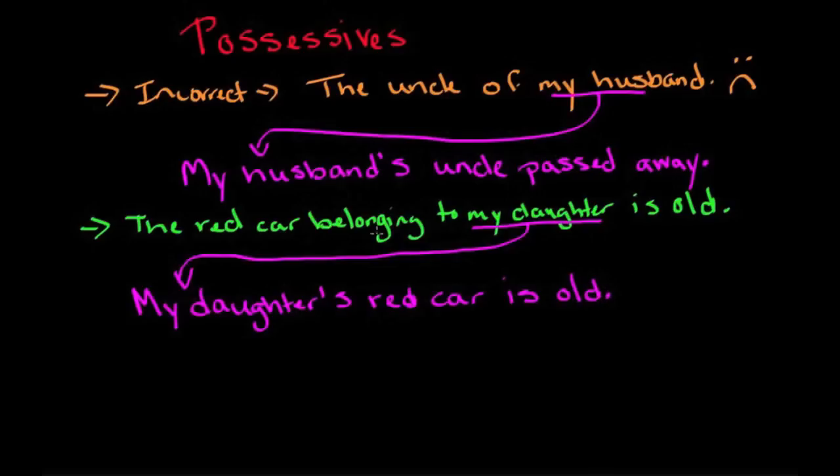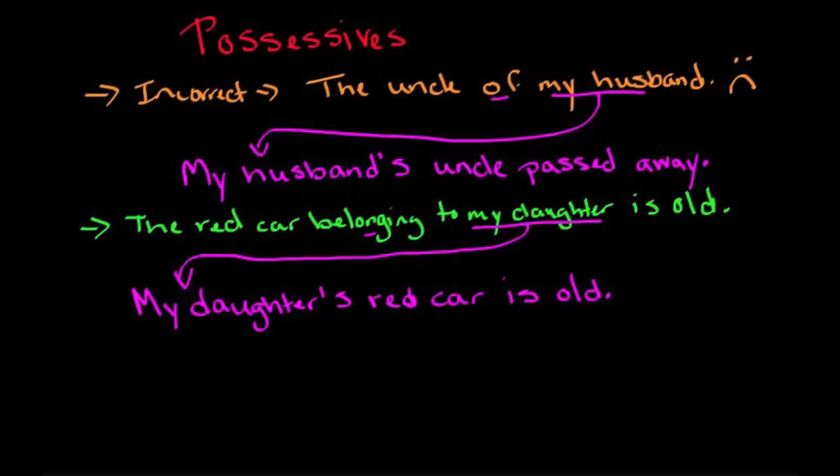So always think when we have belonging or when we say of, most likely we're saying that incorrectly and we need to put the, my husband or my daughter's with the apostrophe S. Now let's take a look at that apostrophe. This can be difficult for many native English speakers as well as many English language learners. So it's pretty simple really. There's a couple rules.